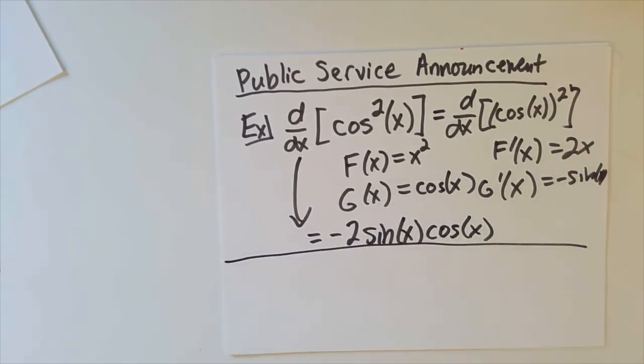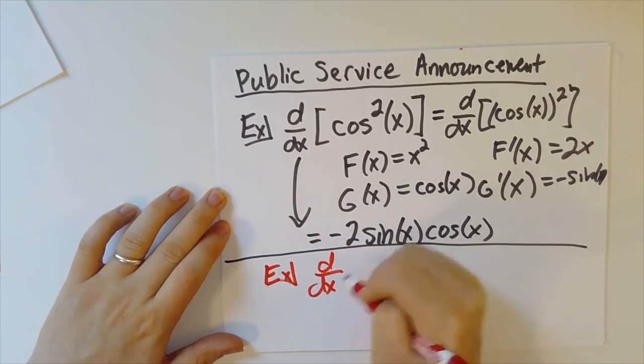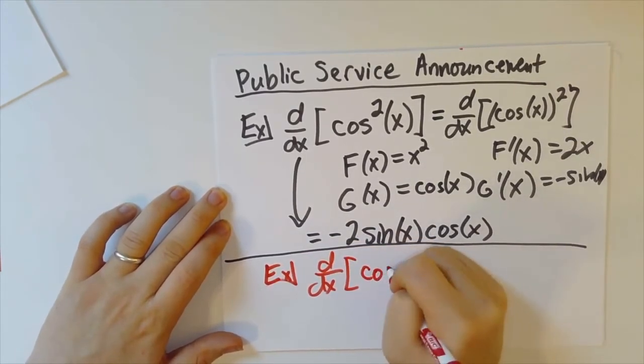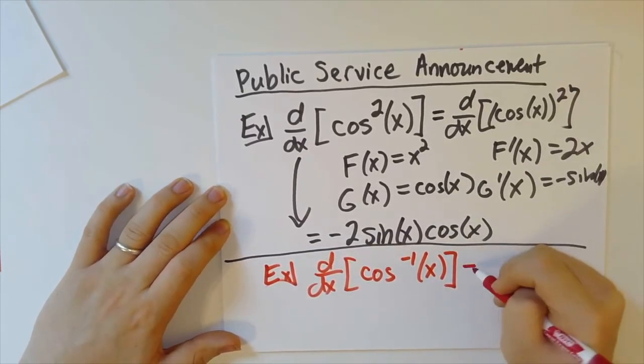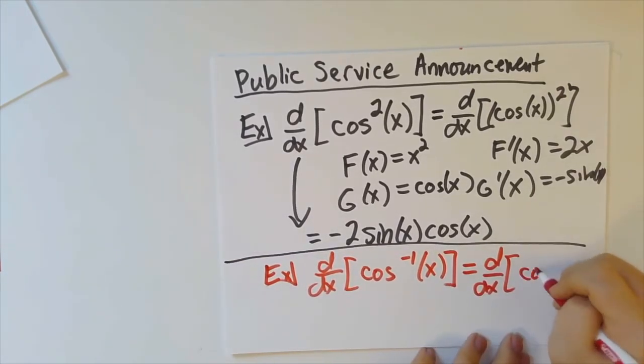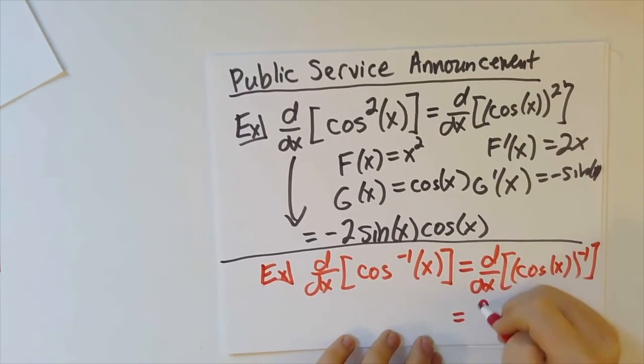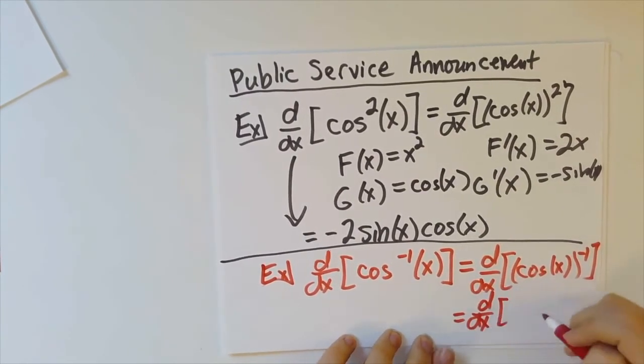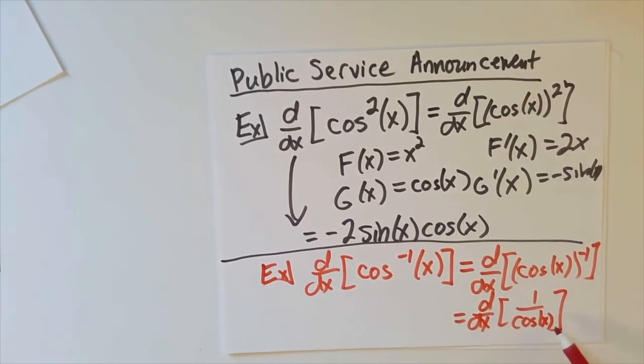Where things go awry is that this tempts you to say, when someone asks for the derivative of inverse cosine of x—or remember, arc cosine of x—that it's the same as the derivative of cosine of x to the minus 1, which is 1 over cosine of x. That's secant, and I know the derivative of secant is secant tangent.